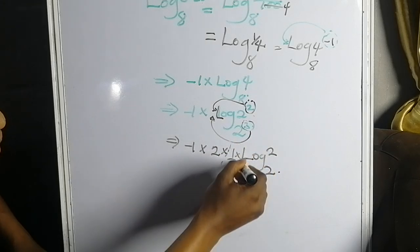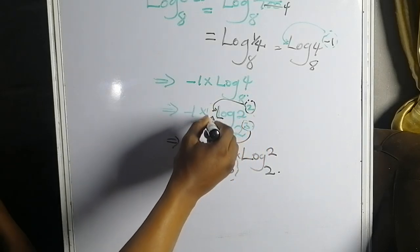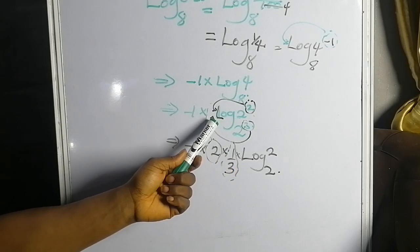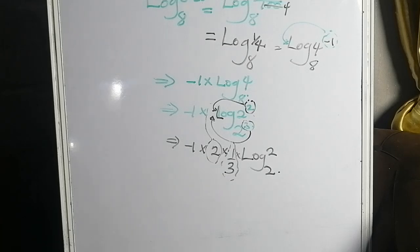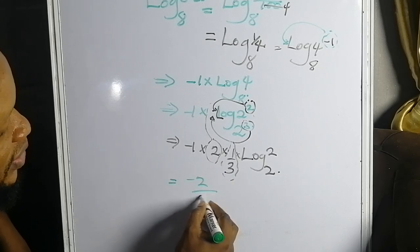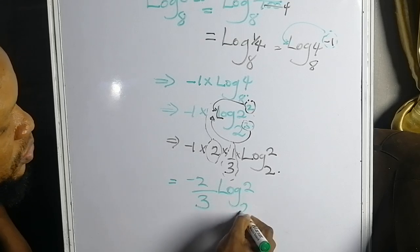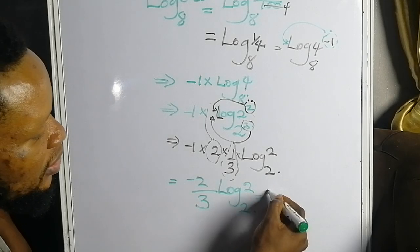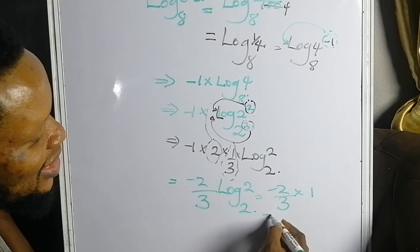For the power of the base, you write the inverse: if it is 3, you write 1 over 3; if it is 2, you write 1 over 2. So this equals minus 1 times 2 times 1 over 3, times log 2 base 2. Since log 2 base 2 equals 1, this gives minus 2 over 3 times 1.